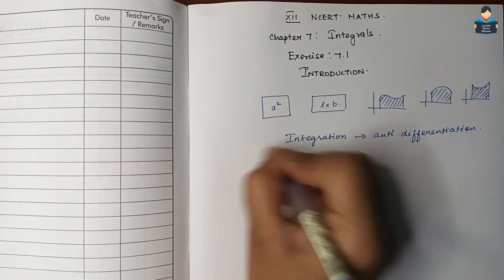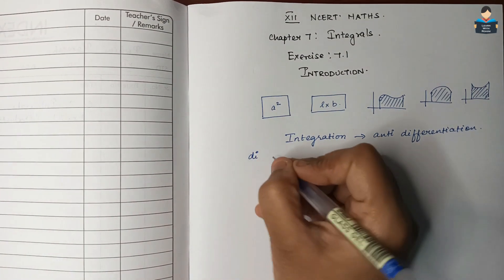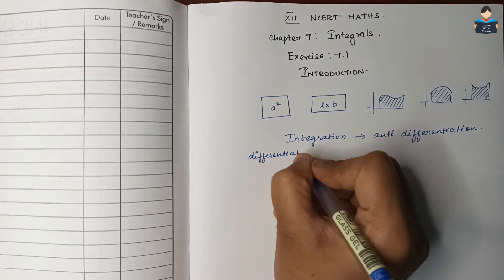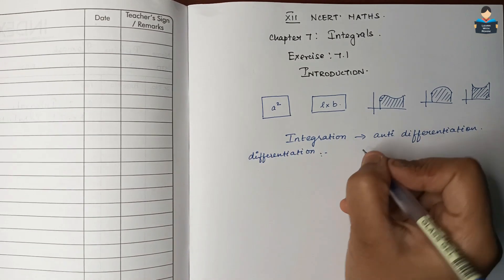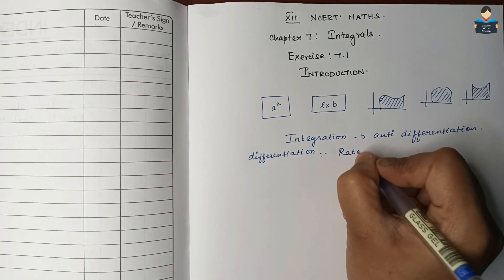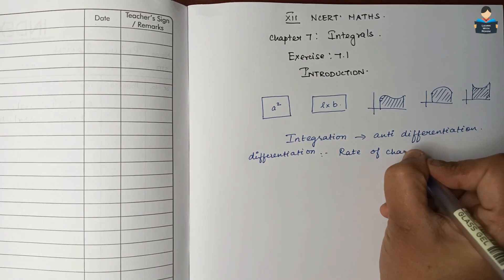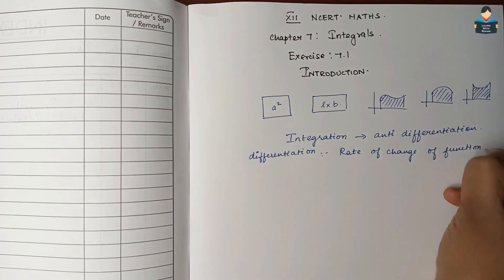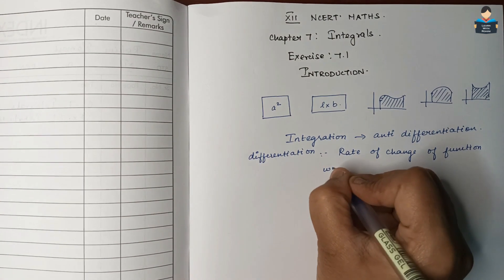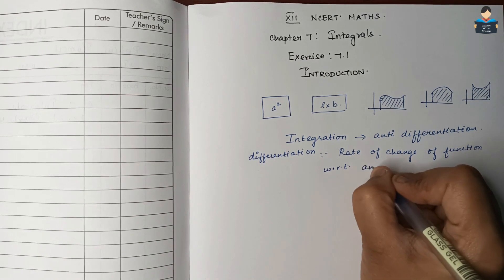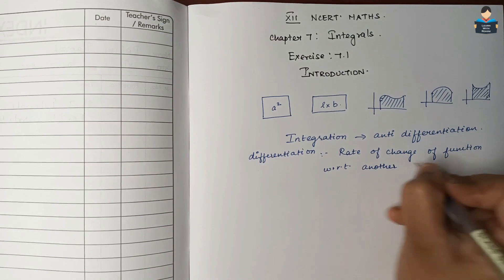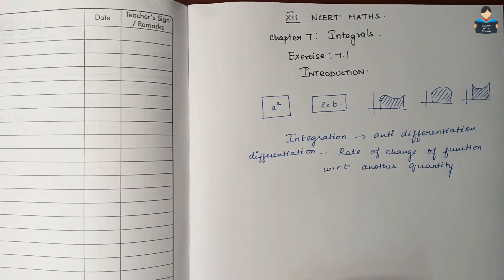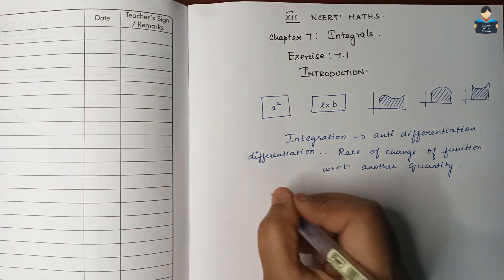We studied differentiation in the last chapter. Differentiation is the rate of change of a function with respect to another quantity.